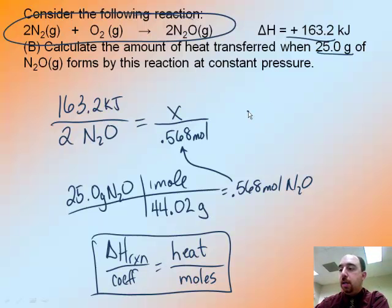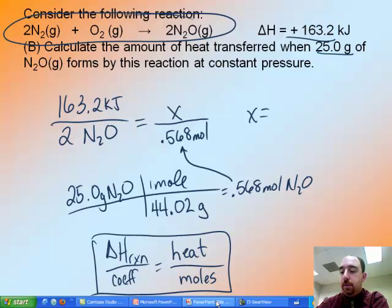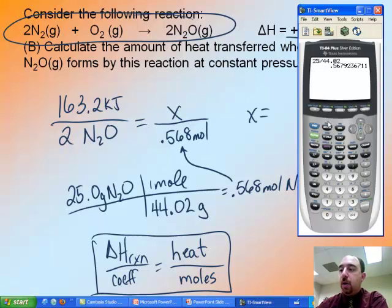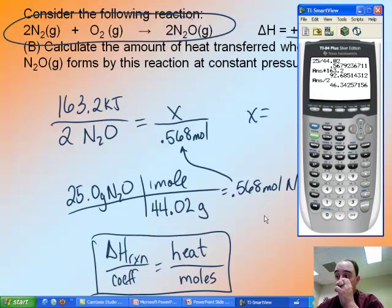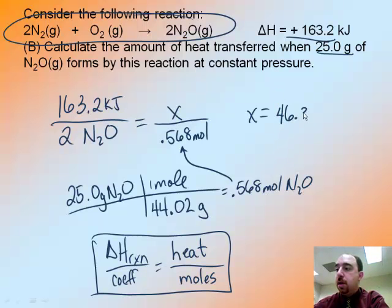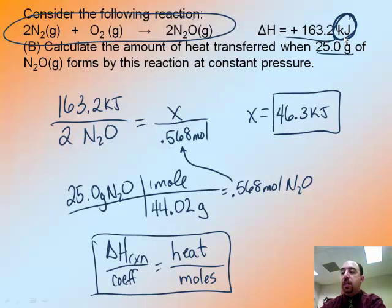So I have my moles times 163.2 divided by 2 is 46.3 kilojoules. And the reason I know here it's kilojoules is because that's the way it was given in the problem. So what this is telling me is, in a perfect situation, 163.2 kilojoules is going to be absorbed for 2 moles. But since I only have 0.568 moles, only 46.3 kilojoules is actually used.